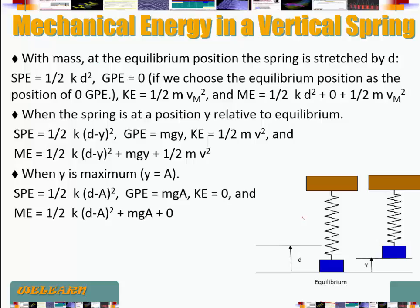Let's consider the situation for a vertical spring-mass system. What's different here is that at equilibrium the spring is going to be stretched, unlike the case of a horizontal spring-mass system. It's going to be stretched because the mass exerts a force that stretches the spring by a certain amount, and we can find that amount by writing mg = kx at that equilibrium position. Solving for x gives x = mg/k, and we'll call that amount of stretching d.